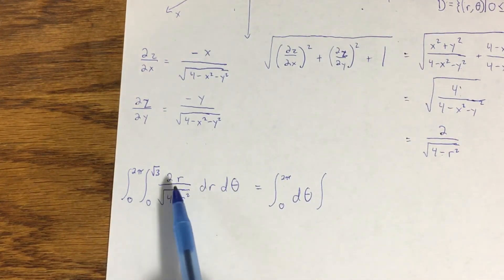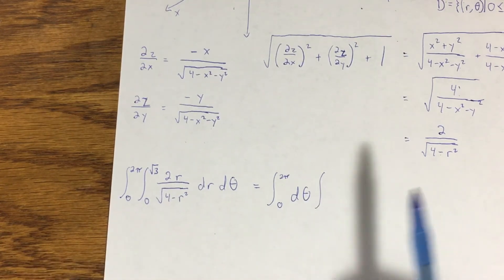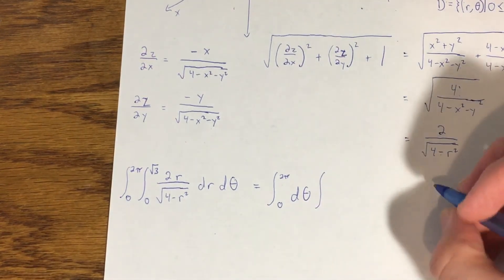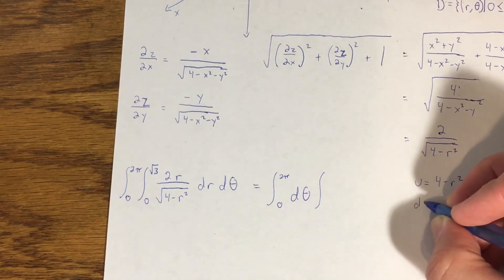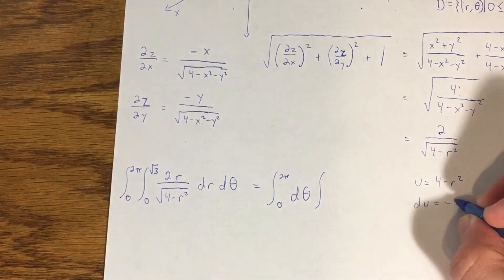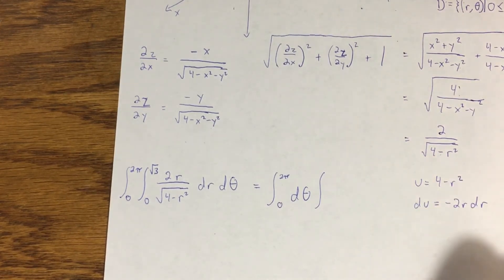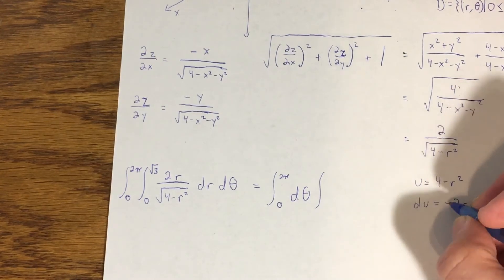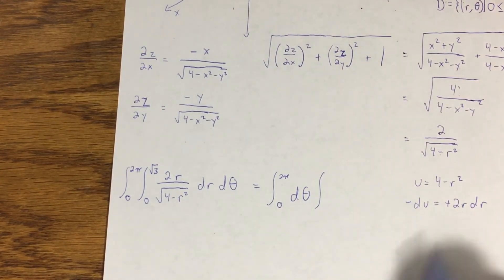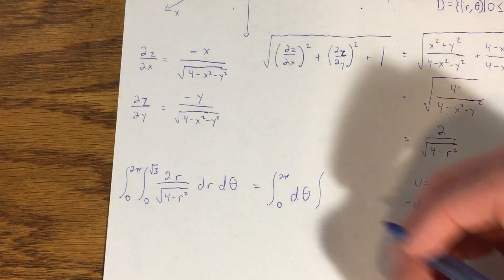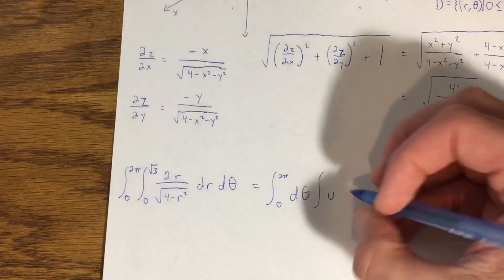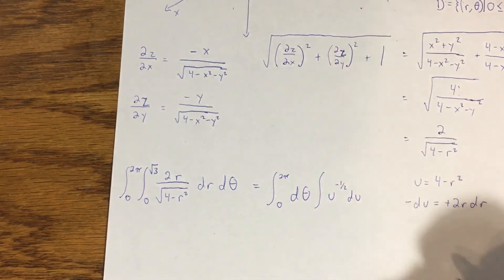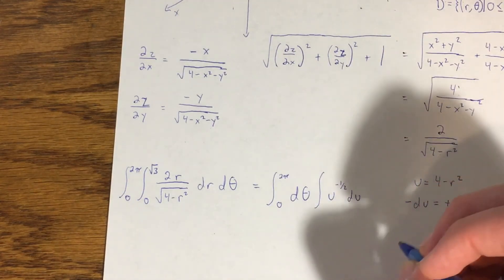Now for the integral here, I can see that solving this is going to boil down to using a u-substitution. I'm going to let u be 4 minus r squared, making du equal to negative 2r dr. I can multiply both sides by negative 1 to get negative du equals positive 2r dr. Since that's what I have right here, 2r dr, that reduces the integrand down to u to the negative one-half du.